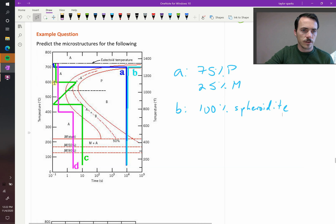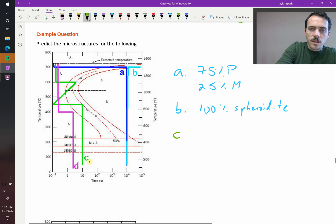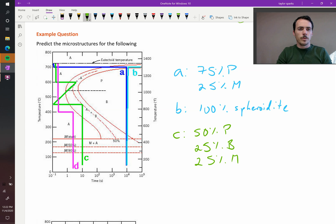What about this one, C? C goes down to 600, you hold it to the 50% line, then you bring it down here and you reset it, and now you hold it for that amount of time, 10 seconds, and it reaches the 50% line there, and then you quench it. So what do you end up with for C? C is going to end up with the following. It's going to be 50% perlite. It's going to be 25% bainite, which is again, 50% of the remaining 50%. And then it's going to be 25% martensite. So that's what we end up with there.